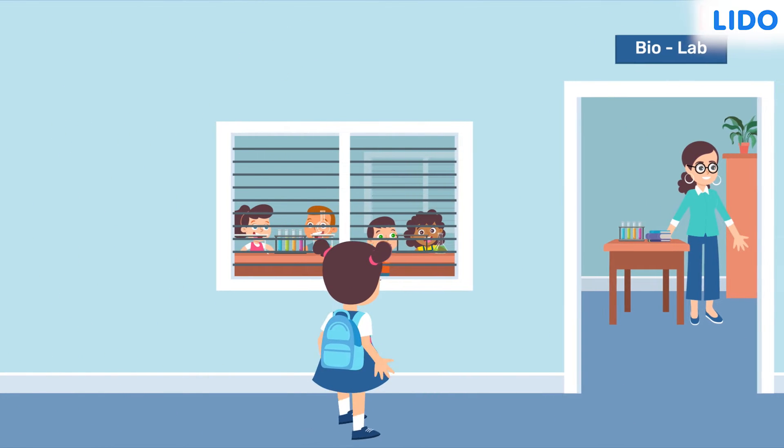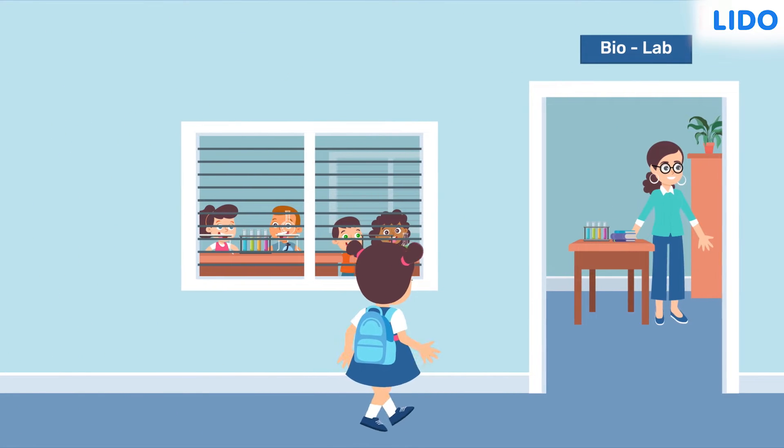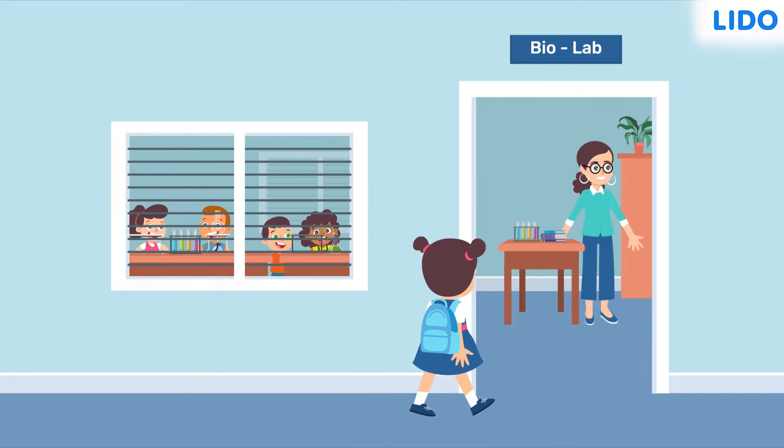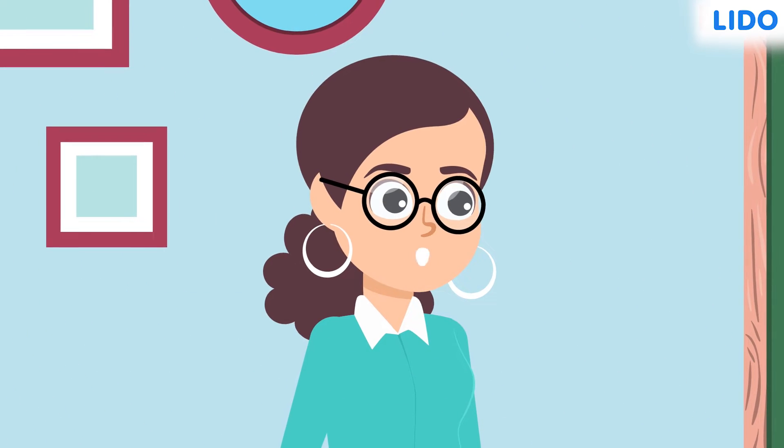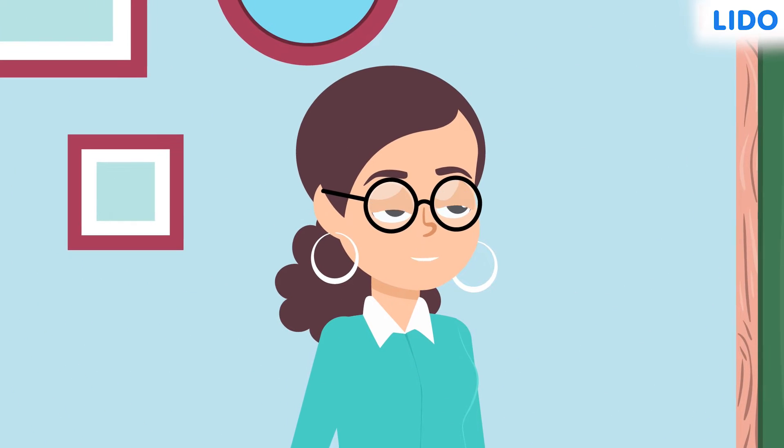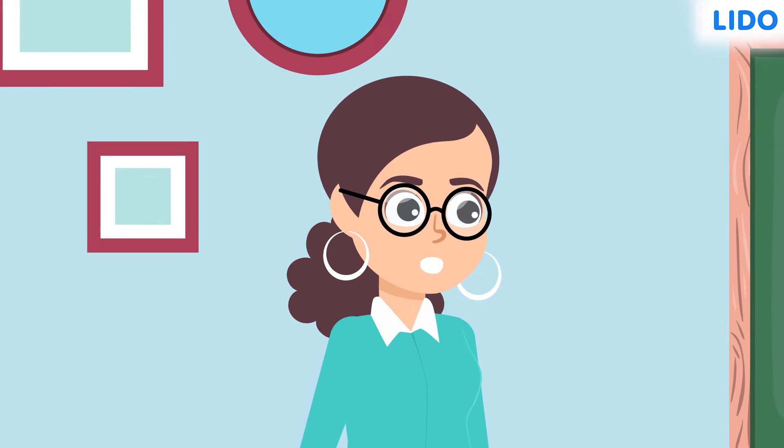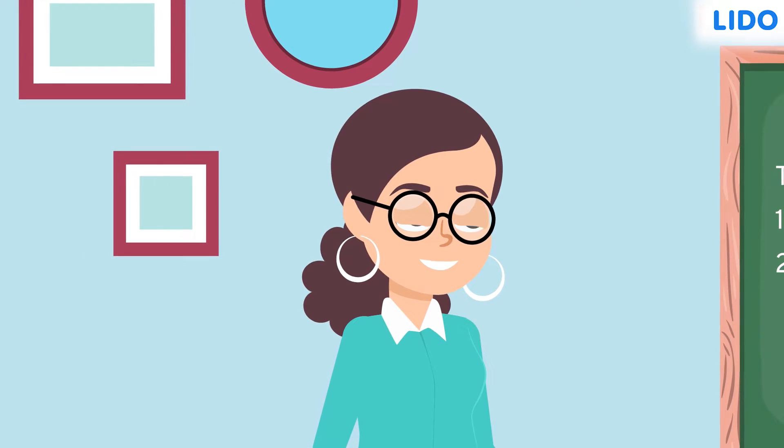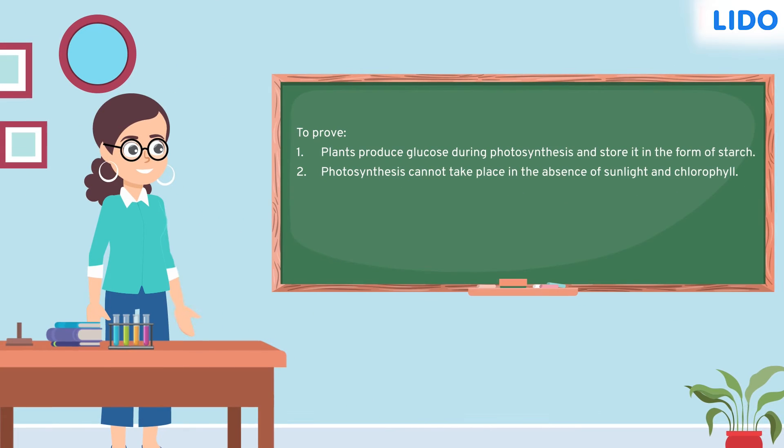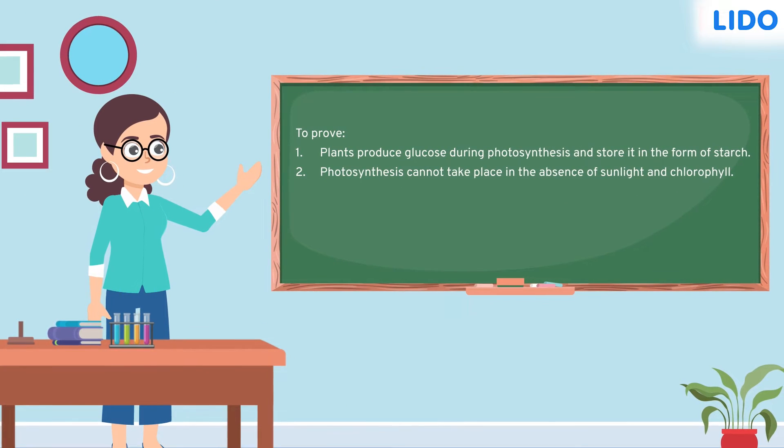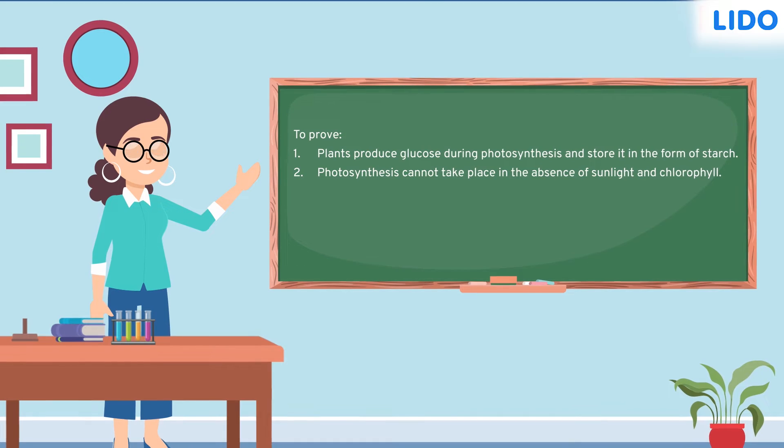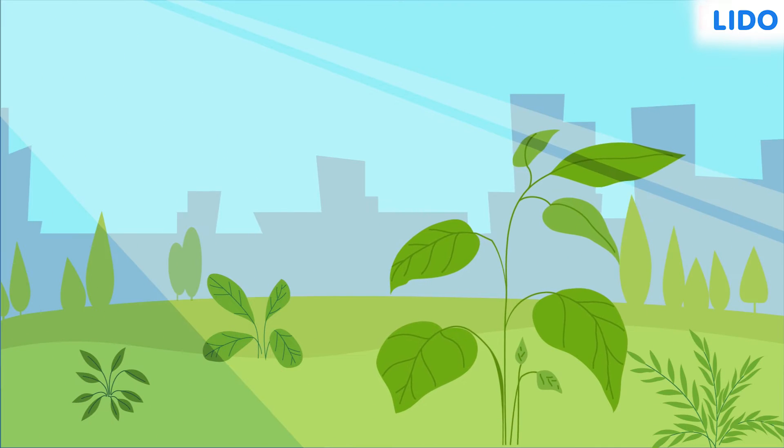Today, Sapna will perform experiments to test facts about photosynthesis at her school's biolab. The teacher explained that they will first see how plants produce glucose during photosynthesis and store it in the form of starch. Then, they would see that photosynthesis cannot take place in the absence of sunlight and chlorophyll.